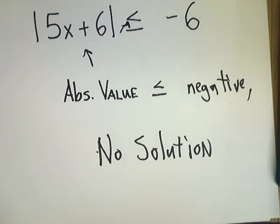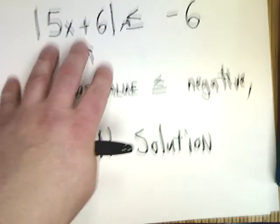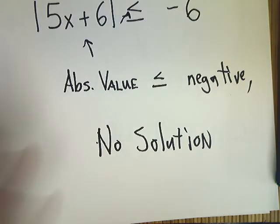because there's no way that it could be equal to a negative number if it's an absolute value. Same thing if it's less than. It can't be. So, those are the absolute value special cases for inequalities, and really not that hard to do.